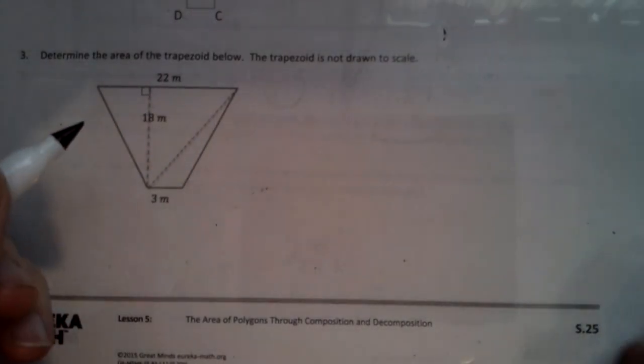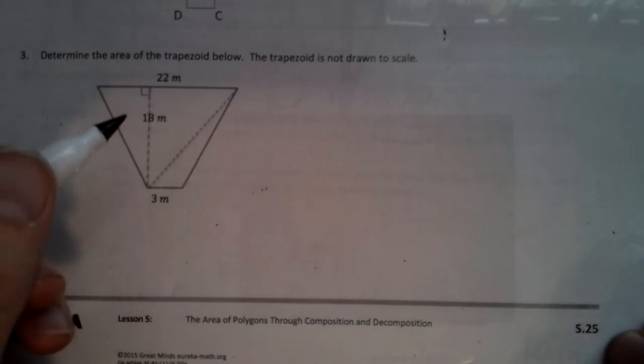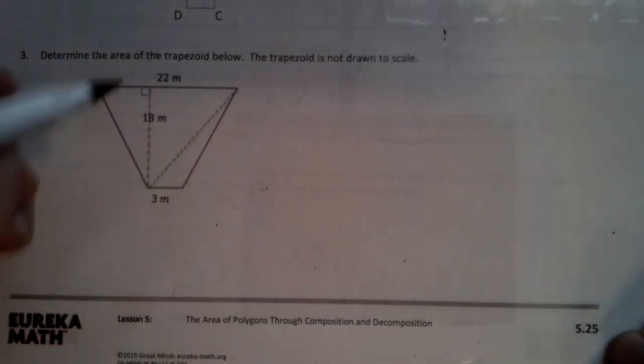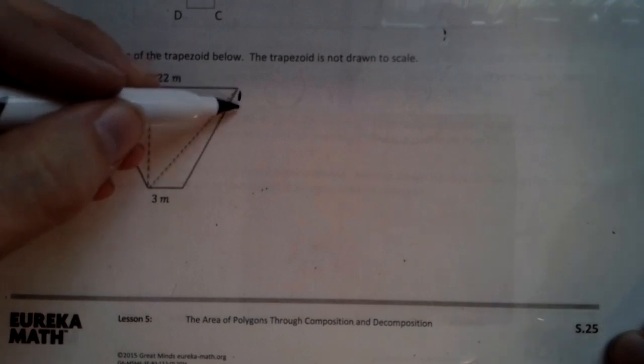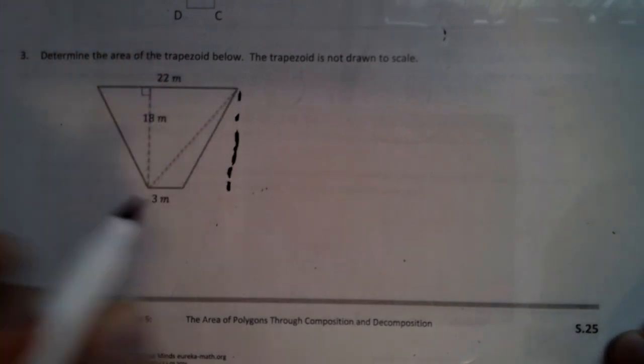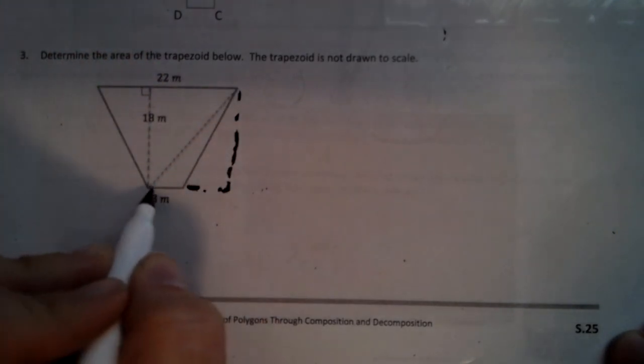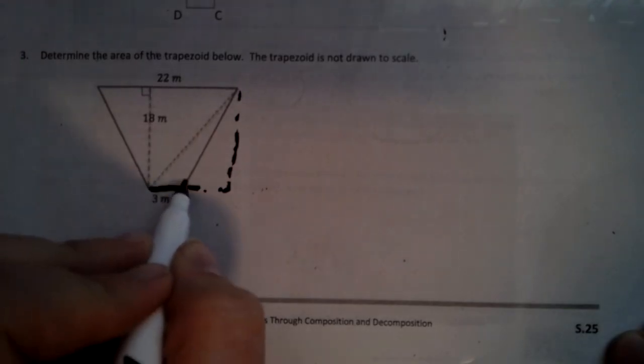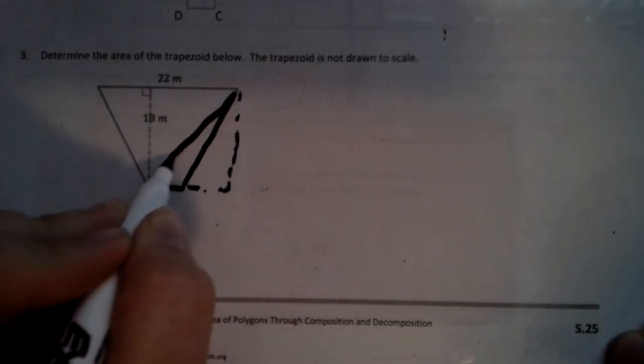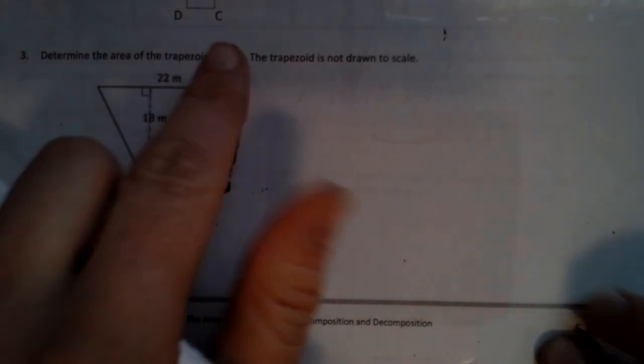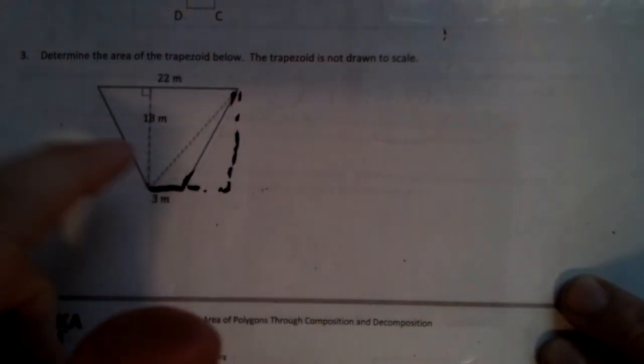We're going to determine the area of this trapezoid. What we're going to do is we're going to notice that there's a couple of triangles, and then we have this weird-shaped triangle. So the first thing I'm going to do is I'm going to drop this height. Just so this triangle right here, I have a height for, okay?